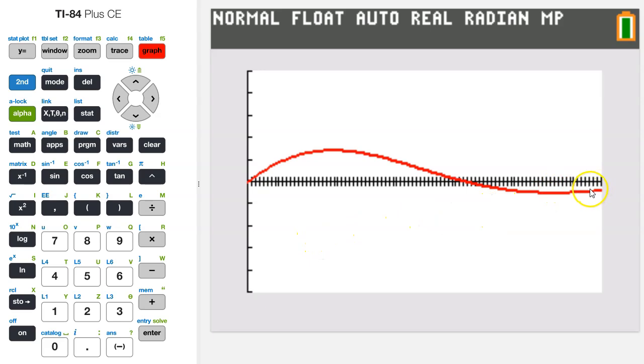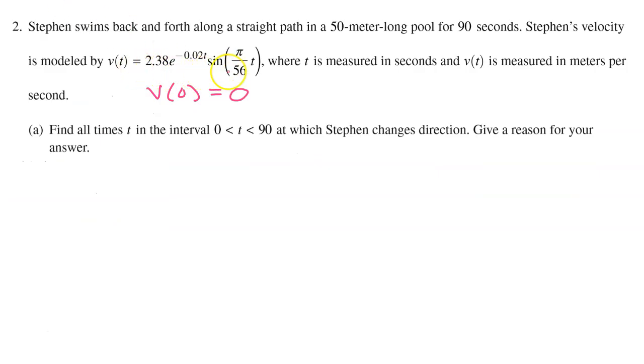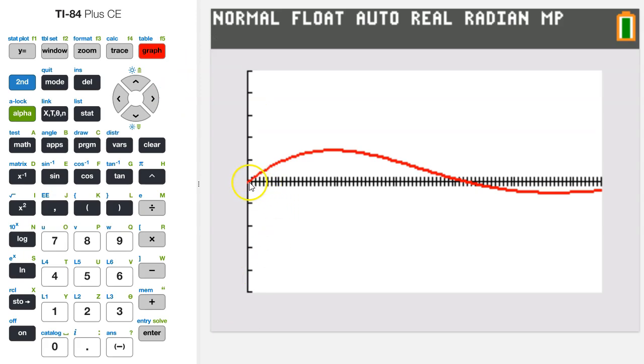All right, so that gives me a pretty clear picture. I can see that velocity changes signs at whatever this intersection point is right here. Looking back at the equation, we know that velocity at 0 will equal 0, because if you plug in 0 for t, that makes sine of 0, which is 0, and 0 times this is 0. So looking back at the graph, we know that the graph on the left is starting off at 0, 0, and then it just goes up from there. So there's no sign change here. So this intersection point is the only place where velocity changes signs.